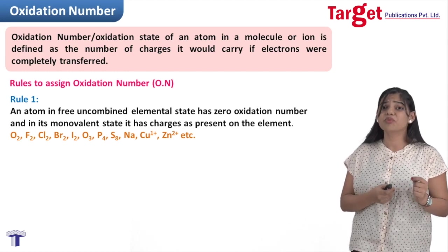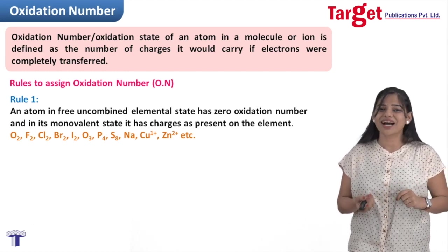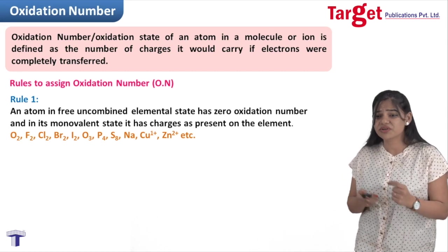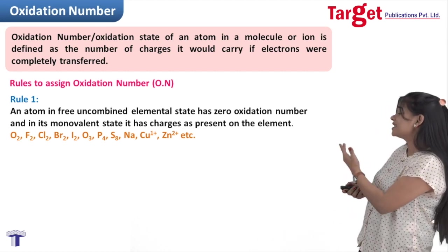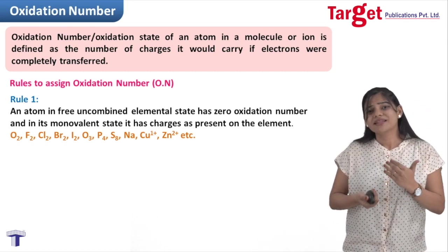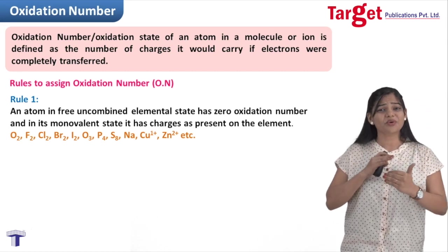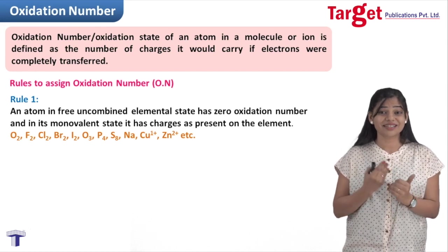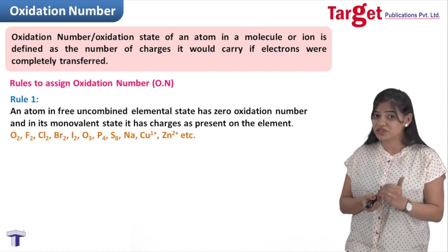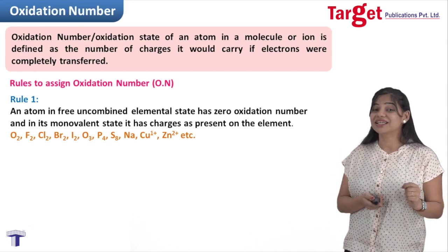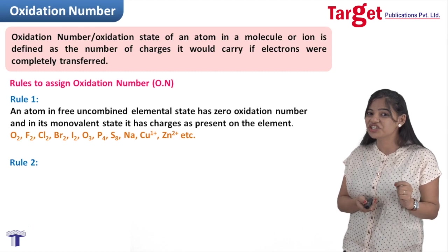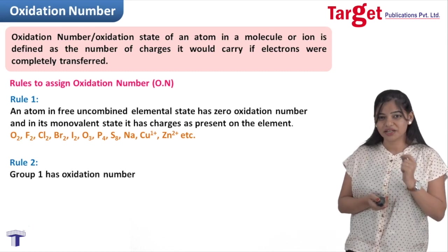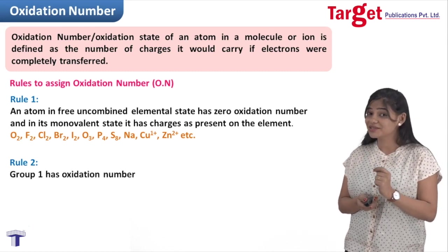If it is in its monovalent or divalent state — for example, if you see on the screen Zn²⁺ and Cu⁺¹ — Zn has already lost two electrons and gained a charge of +2. So in that case, we take the oxidation number of Zn as +2 and copper as +1.